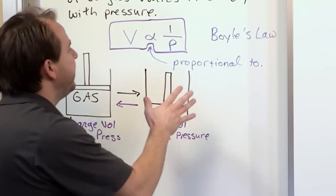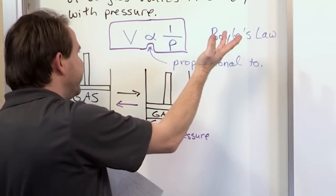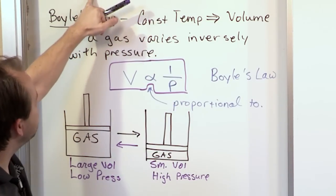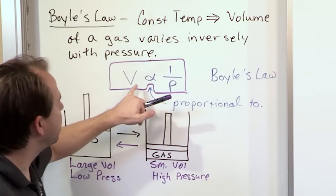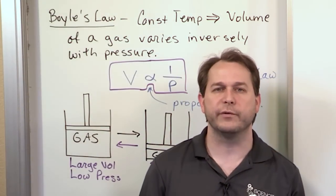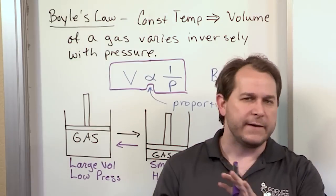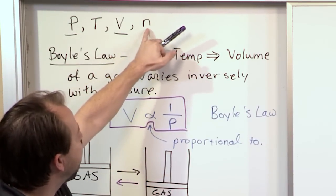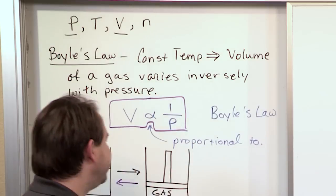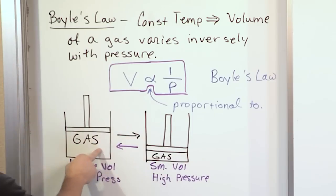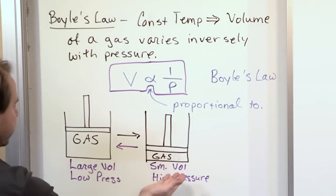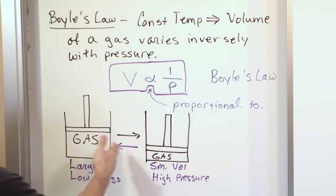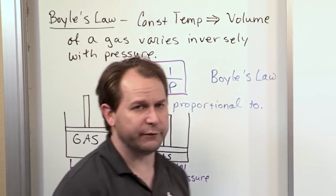Boyle's Law fundamentally says: if I increase the pressure, I decrease the volume, and vice versa. When we talk about this pressure-volume relationship, the temperature of the gas is going to matter, but we say it's constant here. So when we talk about Boyle's Law, we're not factoring in temperature — temperature is constant. Also, the number of moles n is constant too. That makes sense from our example: I didn't add or subtract any gas, so I didn't change the number of moles, and I didn't change the temperature. All I did was fix those two things and change the volume to see what would happen.